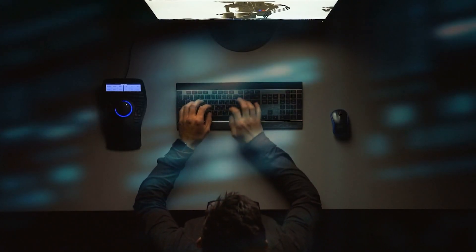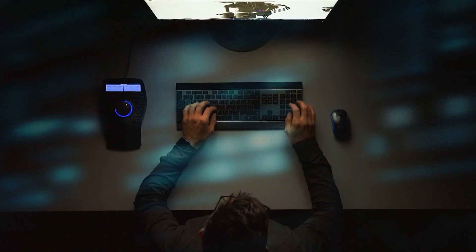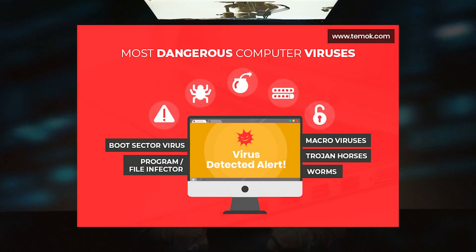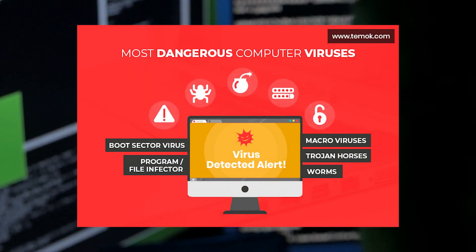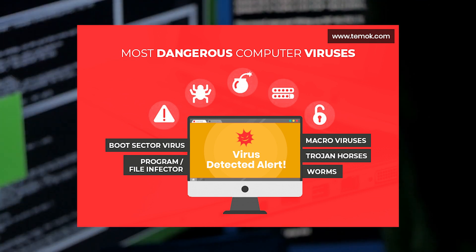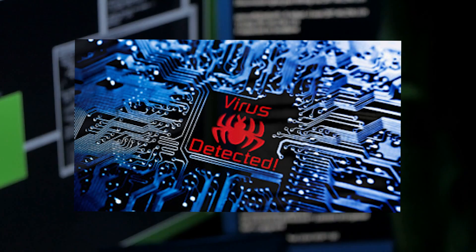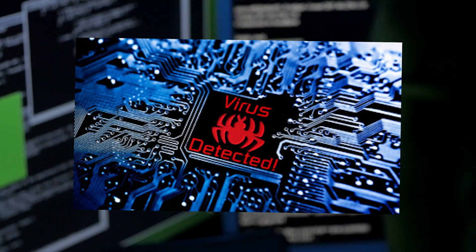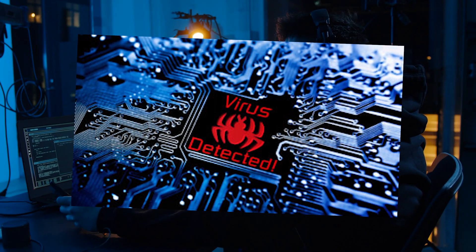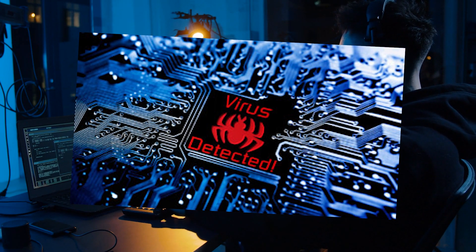Malware is extremely common, the most common types being viruses. These infect applications, attaching themselves to the initialization sequence of your device. The virus then replicates itself, infecting other code and programs in the computer. Viruses can also be attached to executable code or associate themselves with a file by creating a virus file with the same name but an EXE extension, creating a decoy which tricks the system and carries the virus.